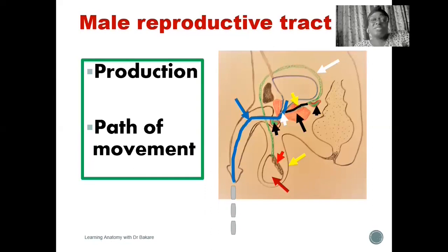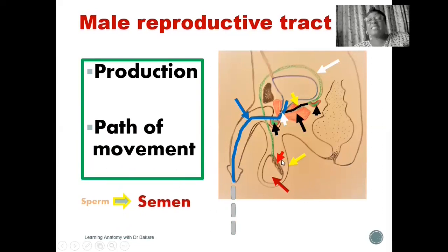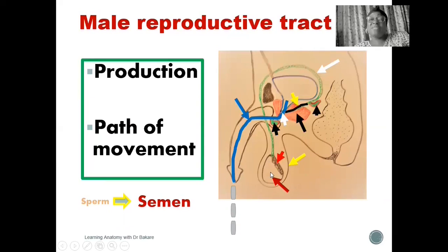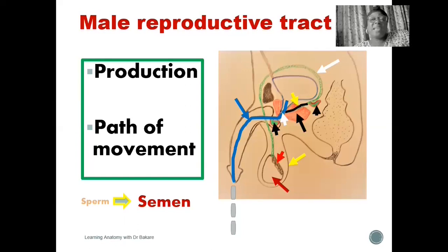It is important to know that the initial production at the level of the testes is sperm. The sperm is further transformed into semen. Semen is formed because the secretions from the different male accessory reproductive organs — including the seminal vesicle and the prostate gland — are added to the sperm produced in the testes, giving a final configuration referred to as semen. As sperm runs through the male reproductive tract, different accessory reproductive organs release their secretions, reconstituting and transforming sperm into the semen that is finally released from the body.